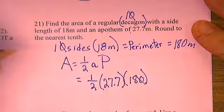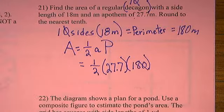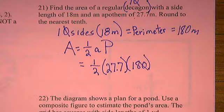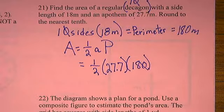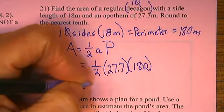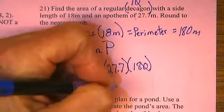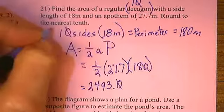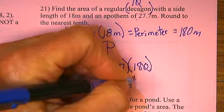I've got a calculator and I am not afraid to use it. So, what am I going to do here? I am going to say 180 multiplied times 27.7 divided by 2 and that gives me 2,493.0, if they want rounding, 0.0 meters squared.